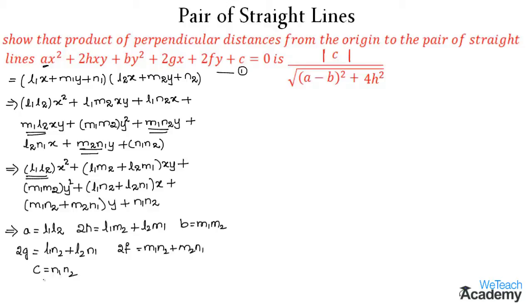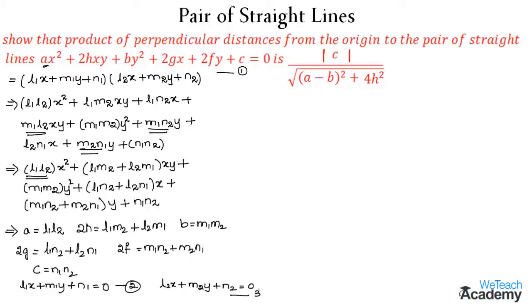Therefore equation 1 represents the product of two lines: l₁x + m₁y + n₁ = 0, which we name equation 2, and l₂x + m₂y + n₂ = 0, which we name equation 3.